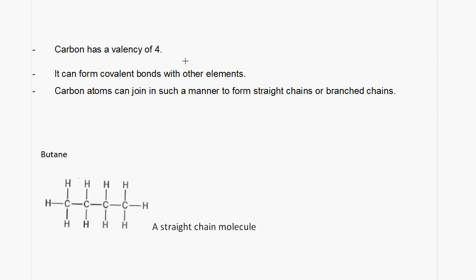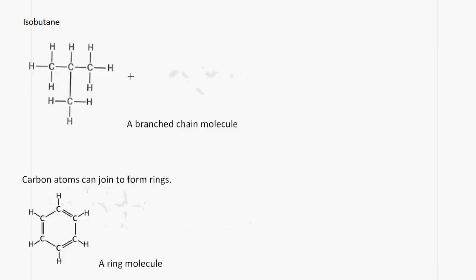This is a straight chain molecule. We have butane — 4 carbon atoms joined together in a straight chain. Carbon can also form a branch chain molecule. We have 3 carbon atoms in a row, and we have this group being a branch to the main chain.